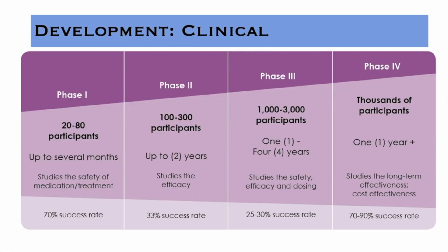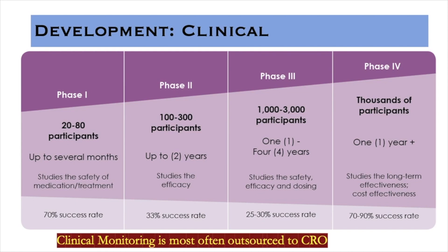Phase 1 can take a few months up to 2 years. Phase 2 can also take around 2 years. Phase 3 is the longest period, taking 1 to 4 years. Phase 4 is roughly 1 year. Regarding success rates: Phase 1 has a 70% chance of success. In Phase 2, the ratio is 1 in 3 — only 1 of 3 drugs progresses. Phase 3 has a 30% success ratio. But in Phase 4, when it comes to commercial launch, there is a 70–90% success rate. So clinical monitoring is the most important activity across these phases.